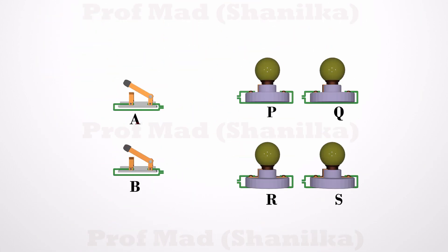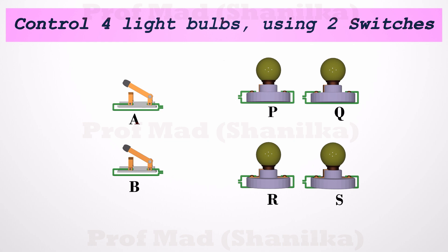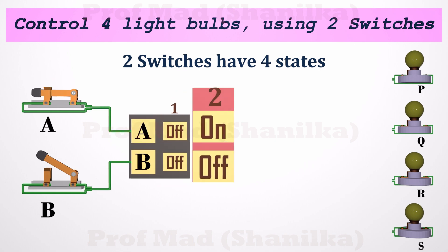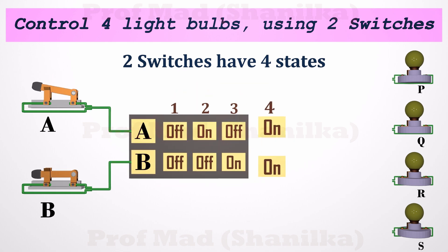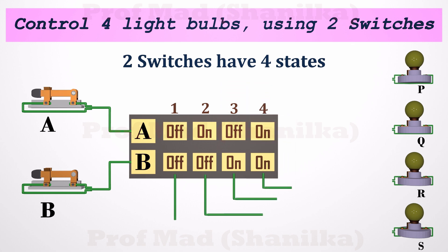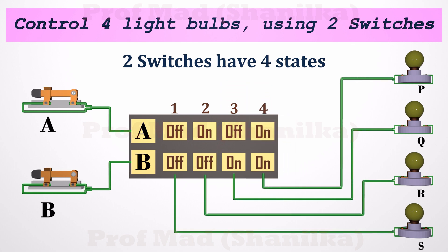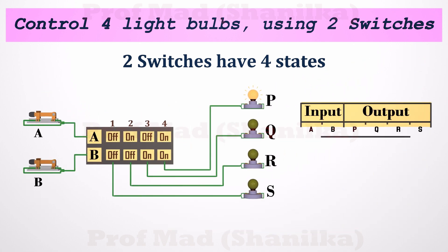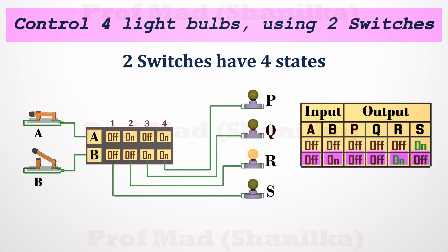For example, think we have two switches and four light bulbs. We need to switch on each light bulb individually using these two switches. Two switches have four combinations or states. We can build a system to turn on one light bulb for just one combination. So the truth table of the required system will be like this.